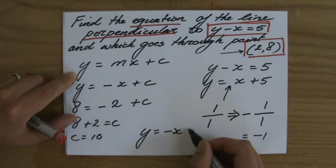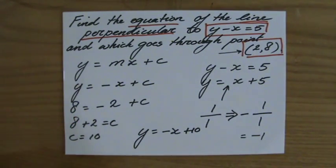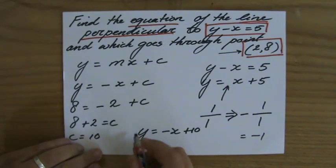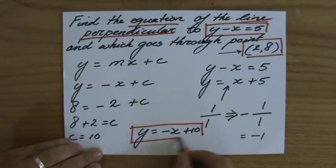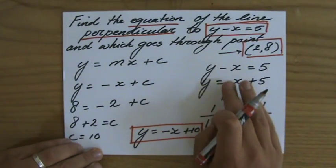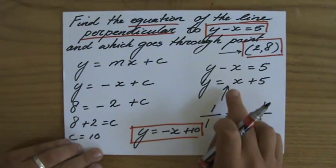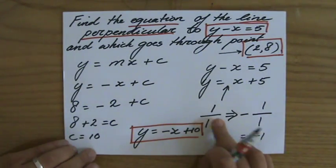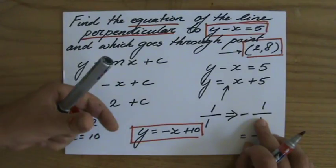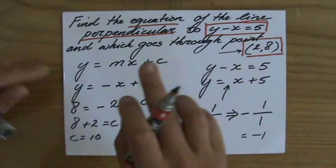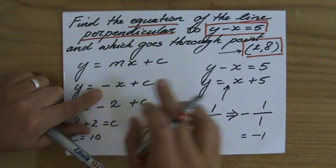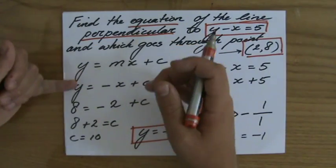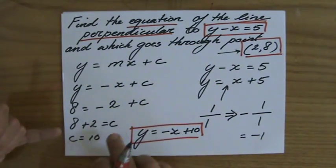So what I had to do first was to rewrite this equation in gradient intercept form so I could see the gradient, then I took the negative reciprocal of that because that will be the gradient of my perpendicular line, and then I use that point to evaluate the equation to find my y-intercept which is 10. So the equation of the line is y equals minus x plus 10.